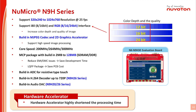Second, this series adopts LQFP package. Compared to BGA package, LQFP package could reduce the layers of PCB to save the total board cost. The built-in SDRAM DDR memory also reduces the demand for PCB area. Third, this series provides a hardware Motion JPEG codec and hardware 2D graphics accelerator, which could increase the speed of image processing.